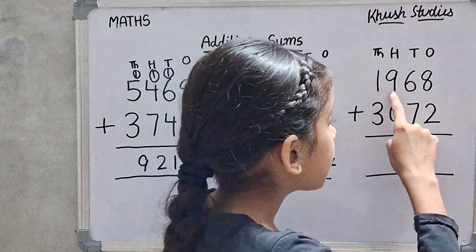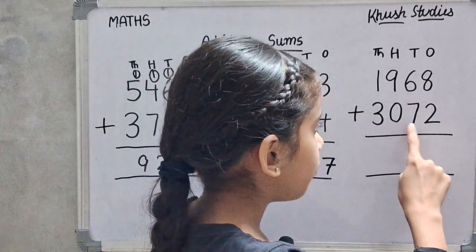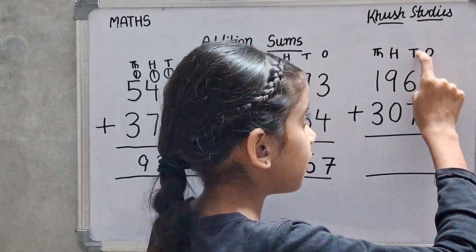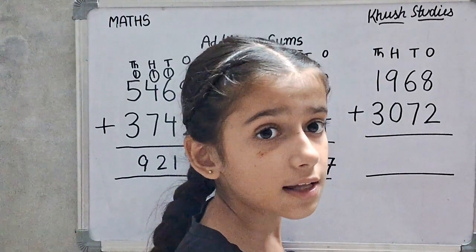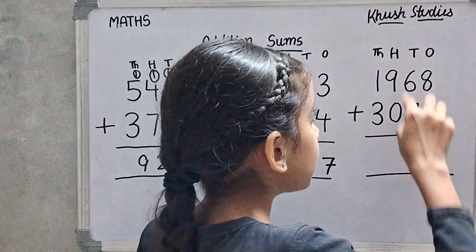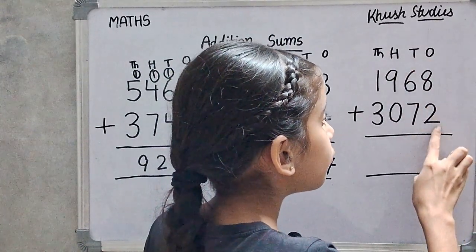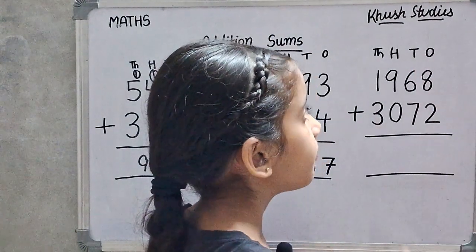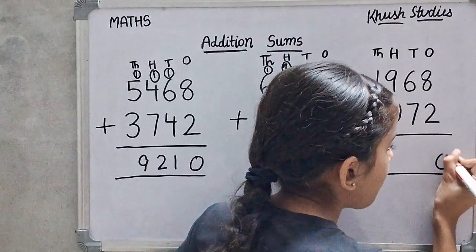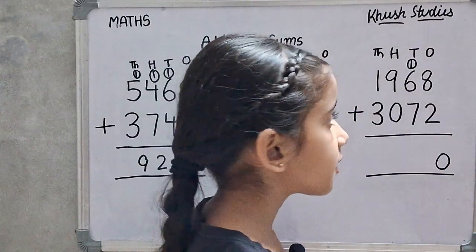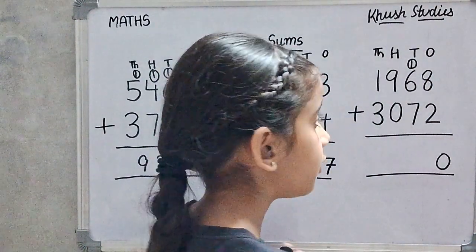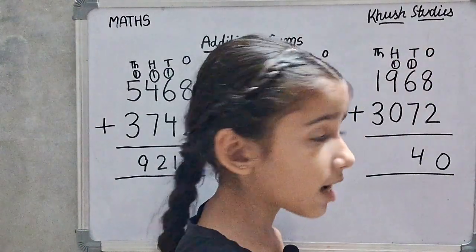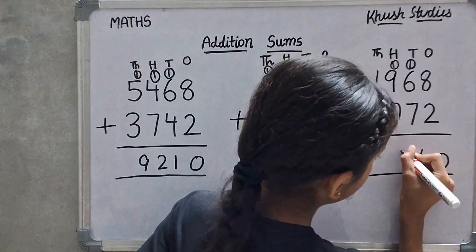We will add 1,968 plus 3,072. First, we will add the ones digit. 8 plus 2 is 10. We will write 1 here. 1 plus 6 is 7, and 7 plus 7 is 14. We will write 1 here. 1 plus 9 is 10, and 10 plus 0 is 10. We will write 0 here.